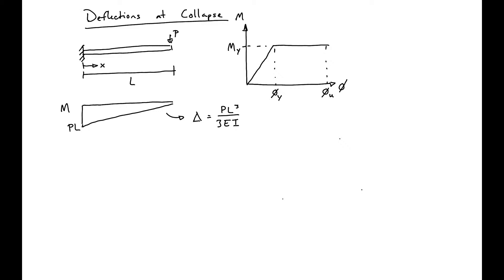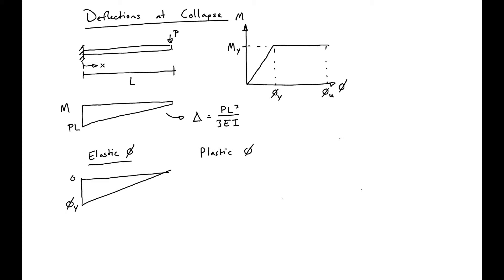We can equate this to curvature. We'll have an elastic curvature, and this is just going to look like a moment diagram with a phi_Y, and then we'll also have a plastic curvature. This will cause a plastic rotation. Over some length, which we'll call LP — the plastic hinge length — our curvature is going to increase to the ultimate curvature.